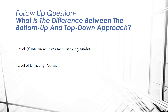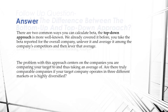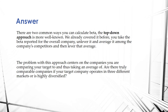A more difficult follow-up question: what is the difference between the bottom-up and top-down approach when calculating beta? There are two common ways to calculate beta. The top-down approach, which we already covered, involves taking the beta reported for the overall company, unlevering it, averaging it among the company's competitors and peer group, and then applying the company's capital structure to lever it up. The problem with this approach centers on the companies you are comparing your target to. Similar to a comparable company analysis or precedent transactions analysis, the peer group selection process will define whether your analysis is correct.